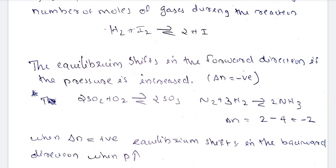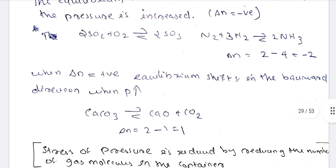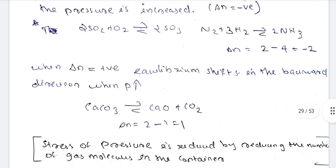If the pressure is decreased, the backward reaction is favored. For example, take the decomposition of calcium carbonate: CaCO3 decomposes into calcium oxide and carbon dioxide. Here, delta N equals 2 minus 1, which gives 1 — wait, that is actually positive. Let's clarify: in this example, delta N is negative.